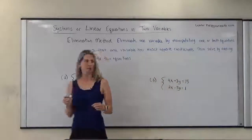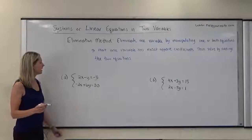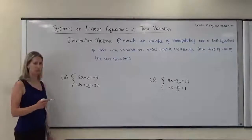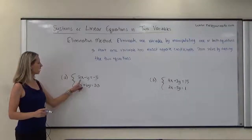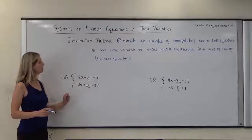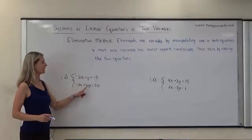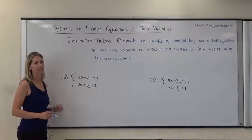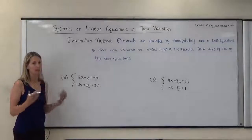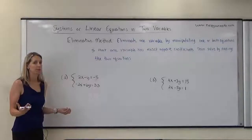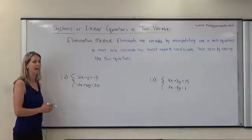Let's look at example A. Here we have 2x minus y equals negative 5, and negative 2x plus 6y equals 20. The coefficients of our x's are 2 and negative 2. The coefficients of our y's are negative 1 and 6. Because 2 and negative 2 are already opposites, we don't actually have to manipulate either equation — we can just go ahead and combine these.